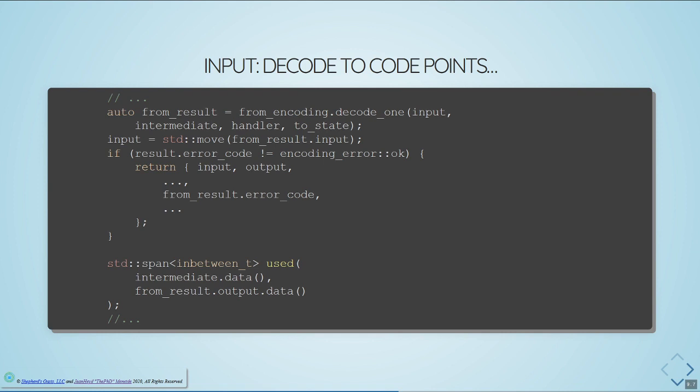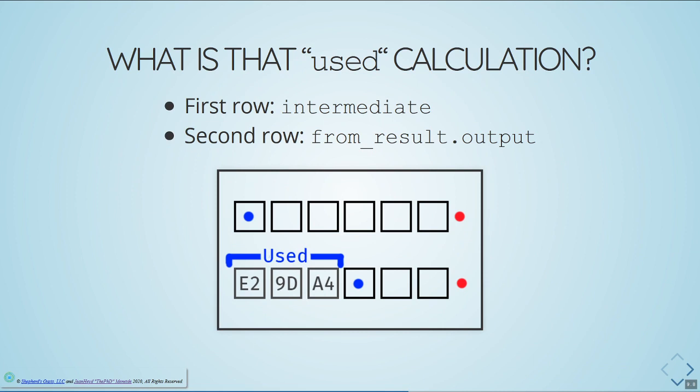We fix up the input after the decode by moving the from result's input back into the input variable to update it. Then we check if the error code of the result is not equal to ok — if it's not, we bail, returning the current input, how much we read, the output, the error code, the state, and everything else. If there is no error, we compute the 'used' amount. This looks a bit like: we take intermediate.data() and from_result.output.data() — both are spans of the same type — and measure the distance between them, which gives us what's used, the portion of the intermediate buffer that was written into.